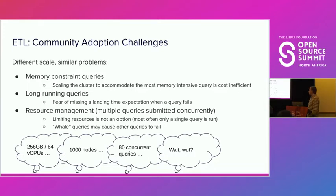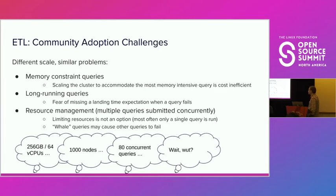Unfortunately, the workaround of deploying very large clusters and managing resources was not feasible because a lot of companies in the community run very small clusters — 10 to 20 nodes. Deploying a cluster with a thousand nodes and running 80 queries concurrently wasn't even up for consideration.